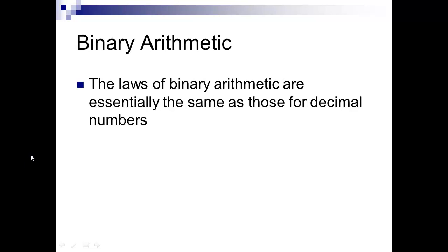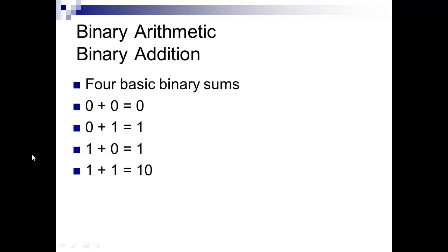The laws of binary arithmetic are very similar to basic decimal numbers, and the laws still apply for all arithmetic. The four basic sums for binary addition are: 0 plus 0 equals 0, just like regular math; 0 plus 1 equals 1; 1 plus 0 equals 1; and 1 plus 1 equals 2 — but it's not a 2 in decimal, it's a 2 in binary.